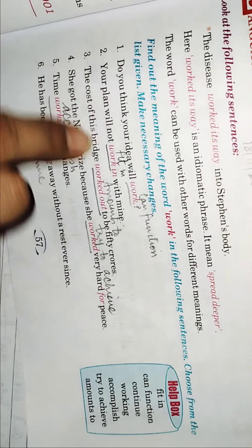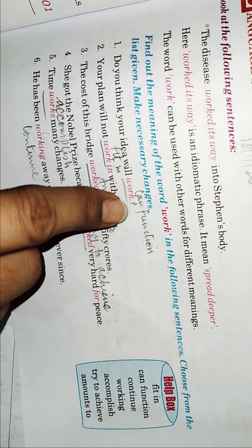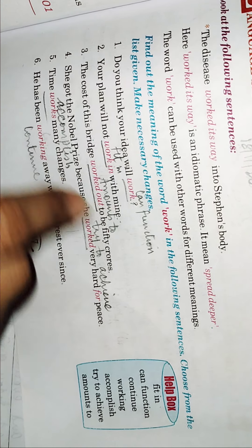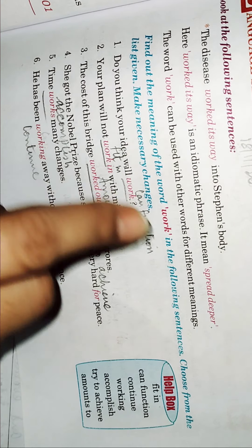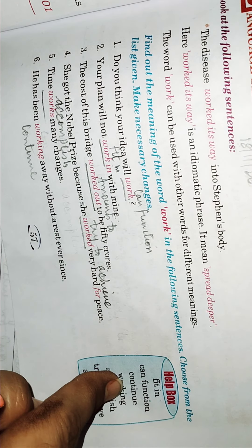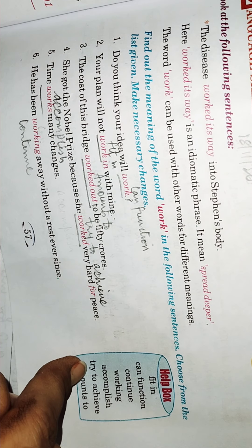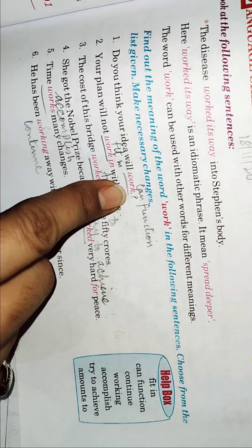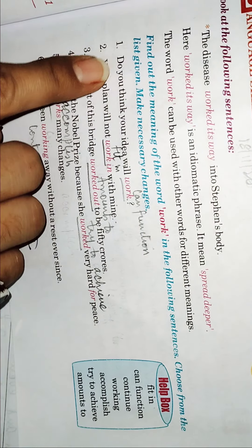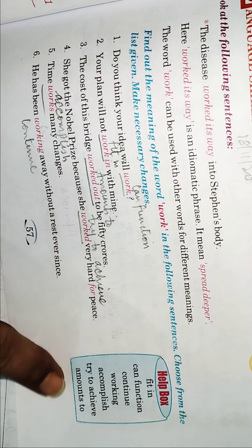So, likewise they have used this phrase work in many sentences and it has a different meaning here. So, we have to find out that which work means what and here is a help box. We have to choose the exact meaning for the word used here. In the first sentence, do you think your idea will work? Here the work means can function.